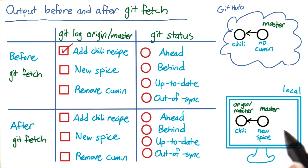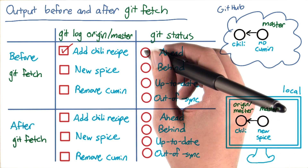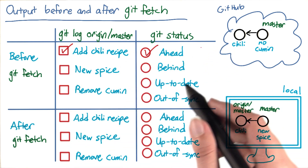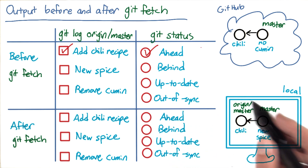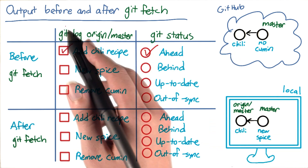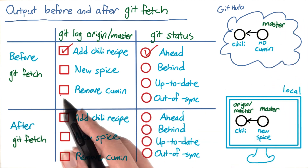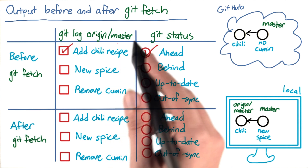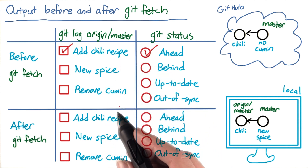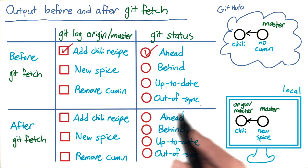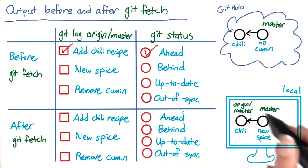If you ran git status, you should have seen that your branch was ahead of origin slash master by one commit. This makes sense because git log and git status both run without internet access. Suppose you were somewhere without internet access when you ran these commands — your local git repository would have no idea that the cumin commit existed, so the cumin commit wouldn't be shown when you ran git log origin slash master. And git status wouldn't know that your branches were actually out of sync; it thinks that your branch is just ahead.